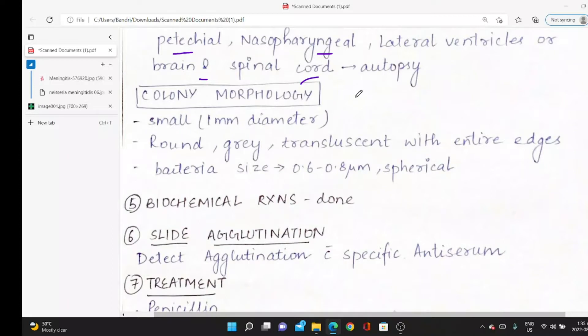Always remember: bacteria morphology is visualized under microscope. Every bacteria has a small size. Bacteria size is 0.6 to 0.8 micrometers. Colony size is 1 mm diameter—what we see on blood or chocolate agar plates. Bacteria size is seen under microscope.